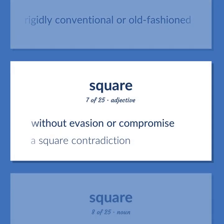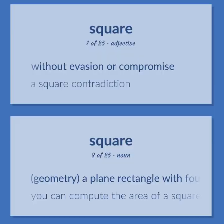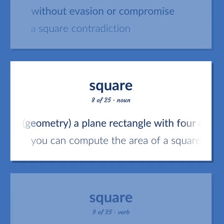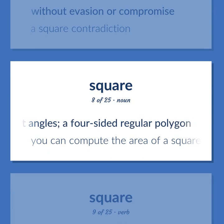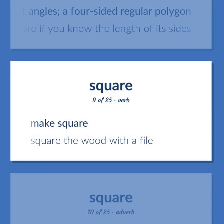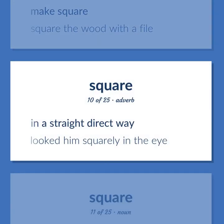Square: without evasion or compromise — a square contradiction. Geometry: a plain rectangle with four equal sides and four right angles, a four-sided regular polygon — you can compute the area of a square if you know the length of its sides. Make square — square the wood with a file. In a straight direct way — looked him squarely in the eye.